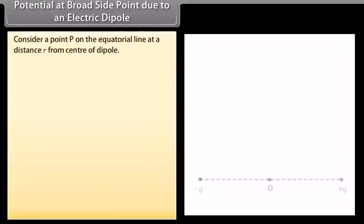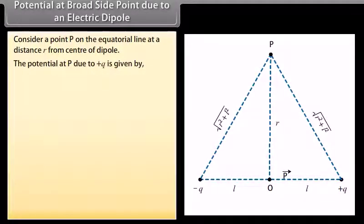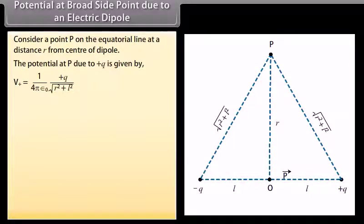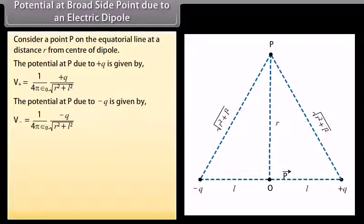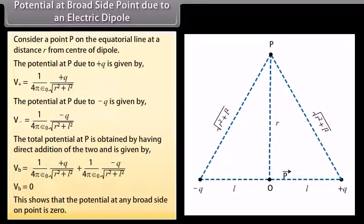Potential at a broadside point due to an electric dipole. Consider a point P on the equatorial line at distance R from the center of the dipole. The potential due to +Q is V₊ = (1/4πε₀) × Q/√(R²+L²), and due to −Q is V₋ = (1/4πε₀) × (−Q)/√(R²+L²). The total potential V_B = 0, showing that the potential at any broadside point is zero.